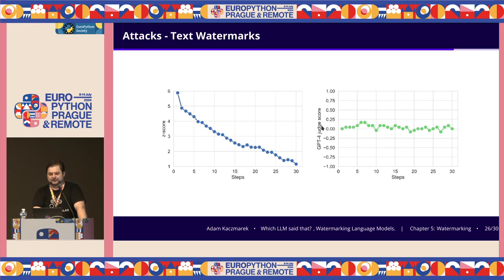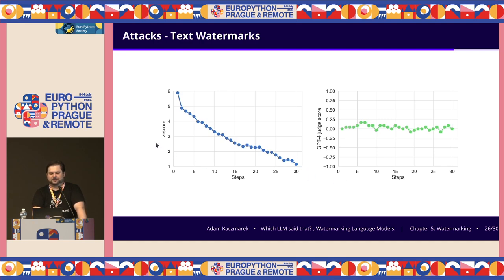Here is a graph showing with green dots the GPT-4 judge score — the quality metric. Basically, the quality doesn't change with their modifications, but the Z-score — the metric used for watermarking — drops down and down with each modification, resulting in text that is still of high quality but no longer detectable as watermarked.